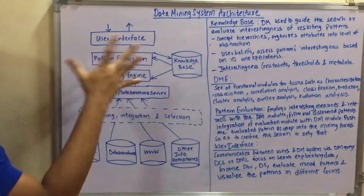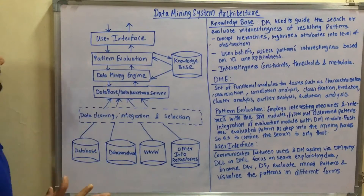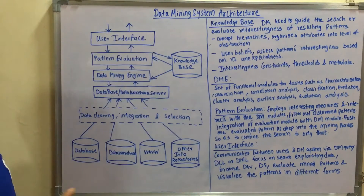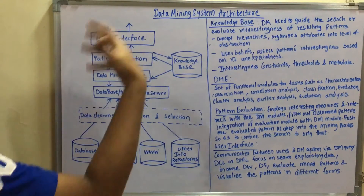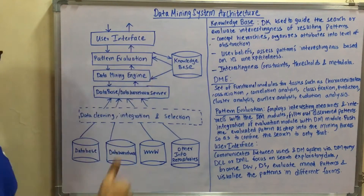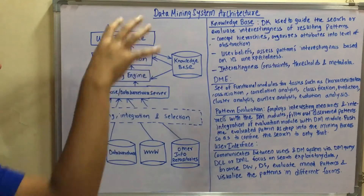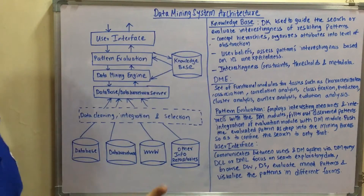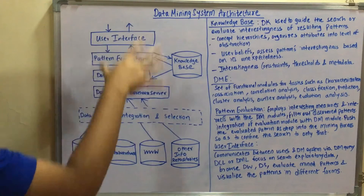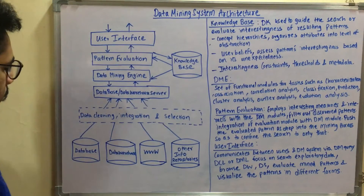This is the diagram. So this is the architecture of a typical data mining system — how it looks. There are different layers involved in this architecture that we'll be seeing on the right-hand side. Let's see a quick overview of what this architecture basically consists of.